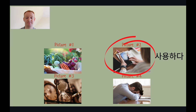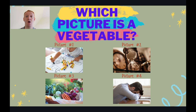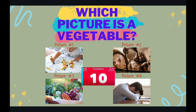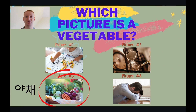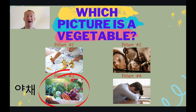Okay, let's go to the next question. Which picture is a vegetable? You have ten seconds. The answer is picture three was vegetables. There are many vegetables here — we have carrots, beetroot, onions, and leeks. Vegetables are very healthy.